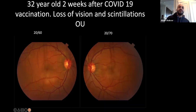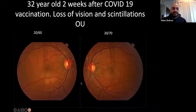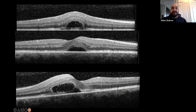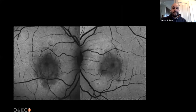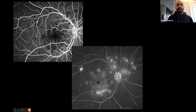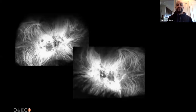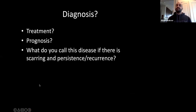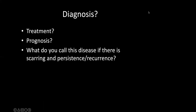Here's a 32-year-old, two weeks after COVID-19 infection, with loss of vision and scintillations. You can see little placoid changes in both eyes bilaterally, vascular retinal detachment in both eyes, thumbprint-like hypo-autofluorescence, blocks early and stains late in a placoid fashion, and persistent hypofluorescence on ICG. This is APMPPE.